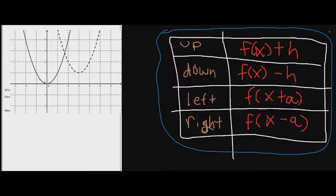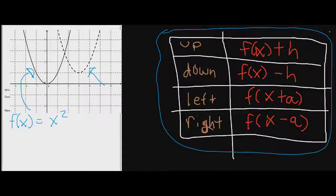Let's go ahead and get started. This dark line right here is our parent function — it should be automatic for us to notice that this is just f(x) = x squared. What we want to find is this translated equation. So we know it's quadratic, and we want to get to this dotted line up here. What do you notice happened from our vertex? Well, we're going to go to the right by three, and then we're going to go up by one.